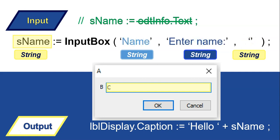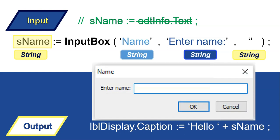We don't like the placeholder ABC, so we give it our own values. The first string is 'Name', the second string is 'Enter name', and we leave the edit control blank with just empty single quotes, so the user can type in what they want. The box now shows 'Name' at the top and 'Enter name' as the prompt — that looks more functional for our program. That's how you get input from the user without using an edit control.